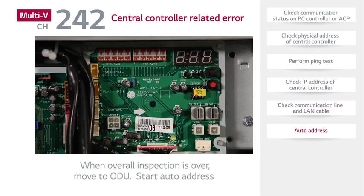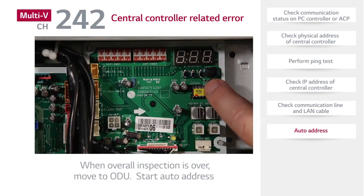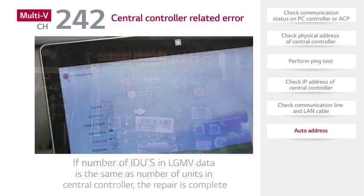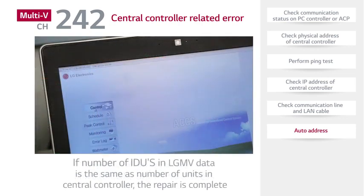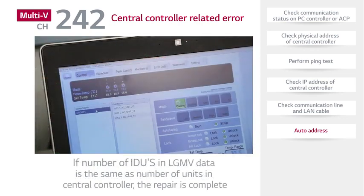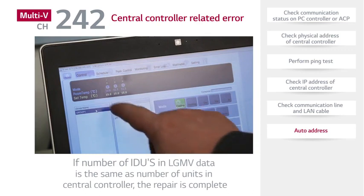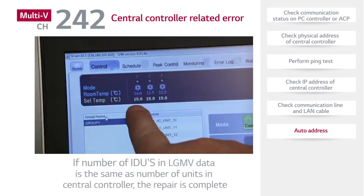Finally, perform auto address. If the number of indoor units in LGMV data is the same as the number of units in the central controller, the repair is completed.